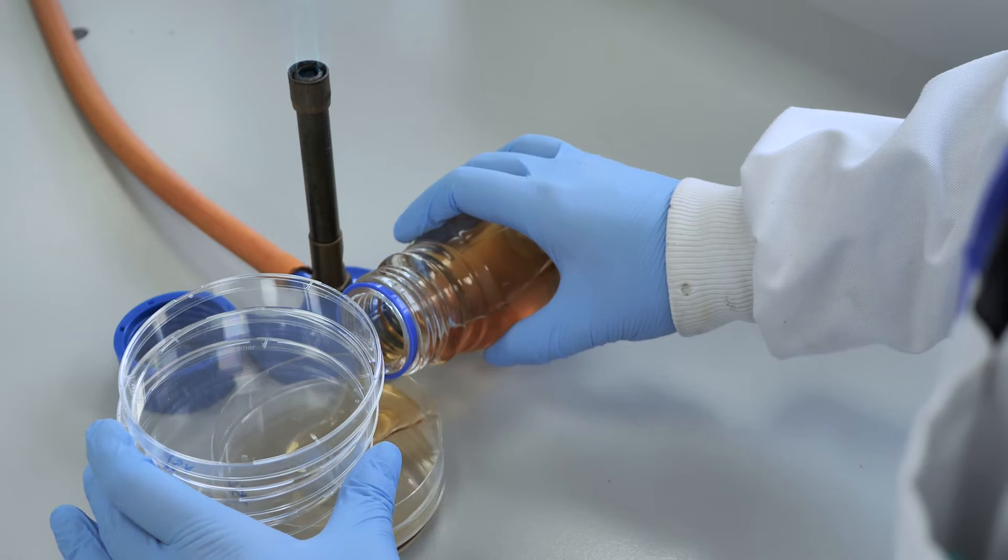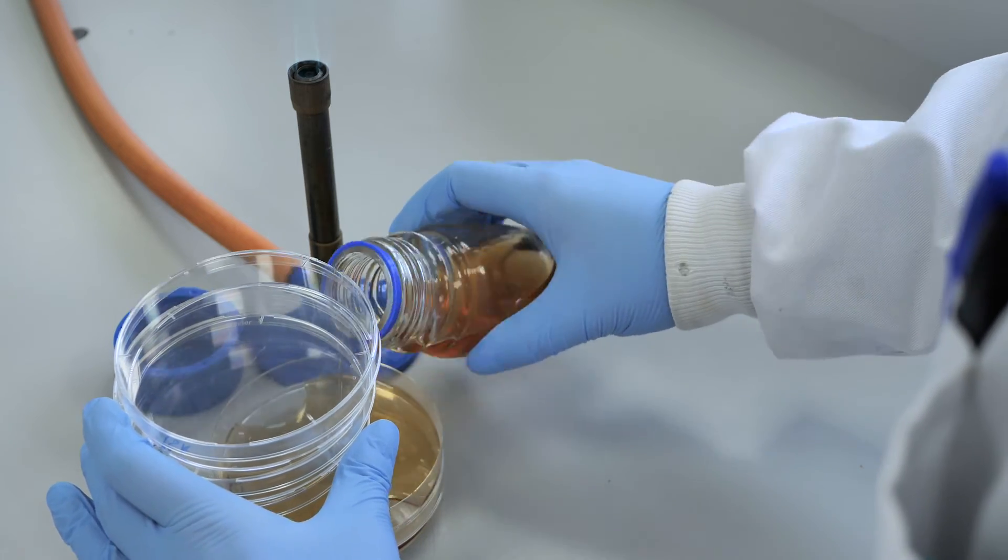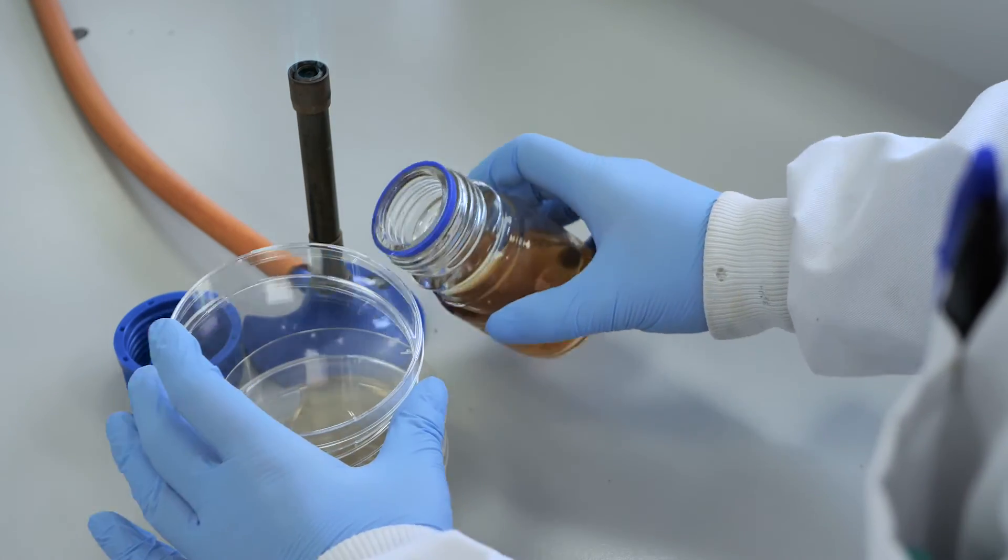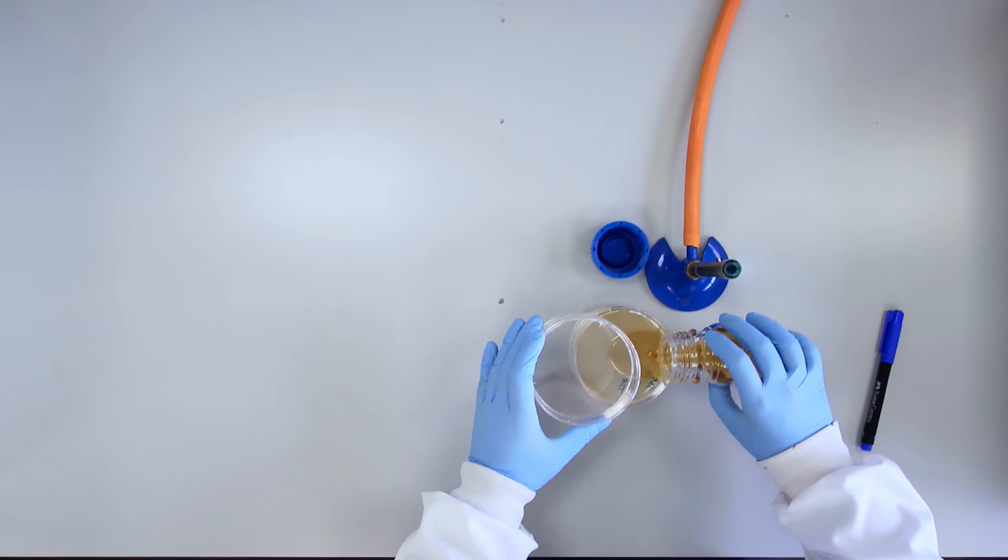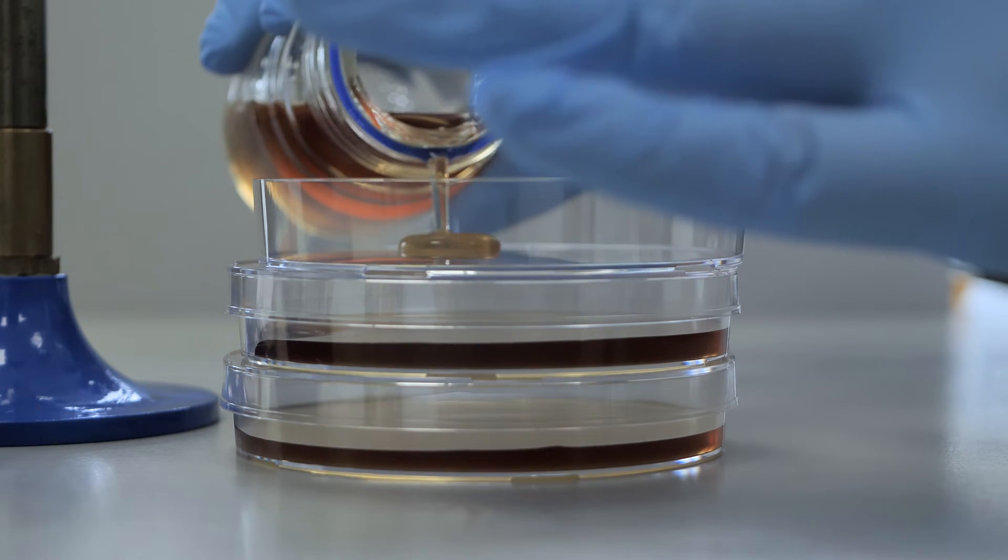Flame the neck of the bottle. Now lift the lid of the second plate and pour in 20 to 25 milliliters of molten agar and replace the lid.